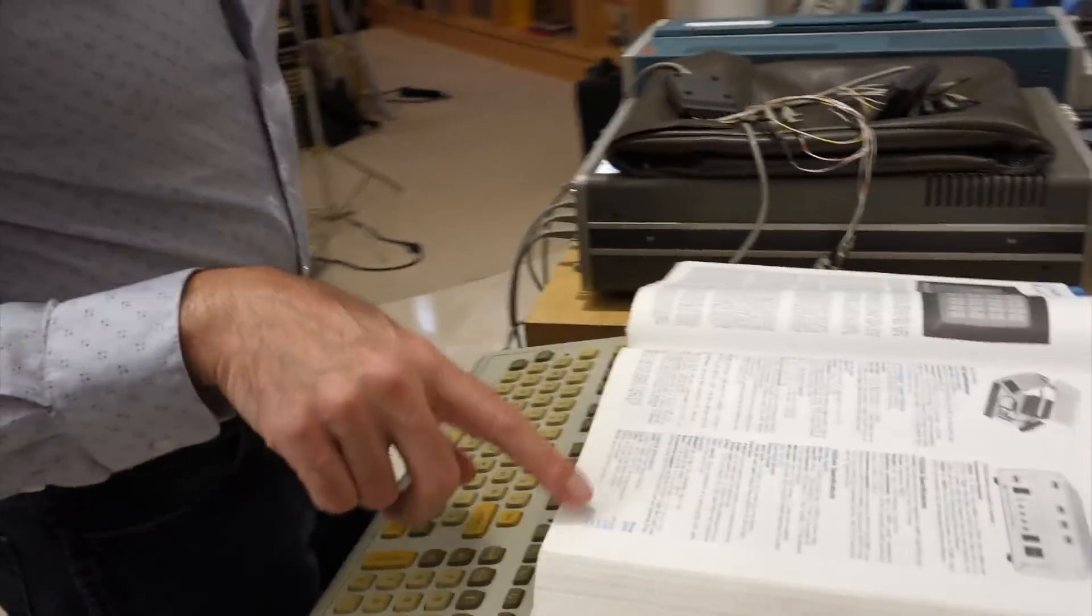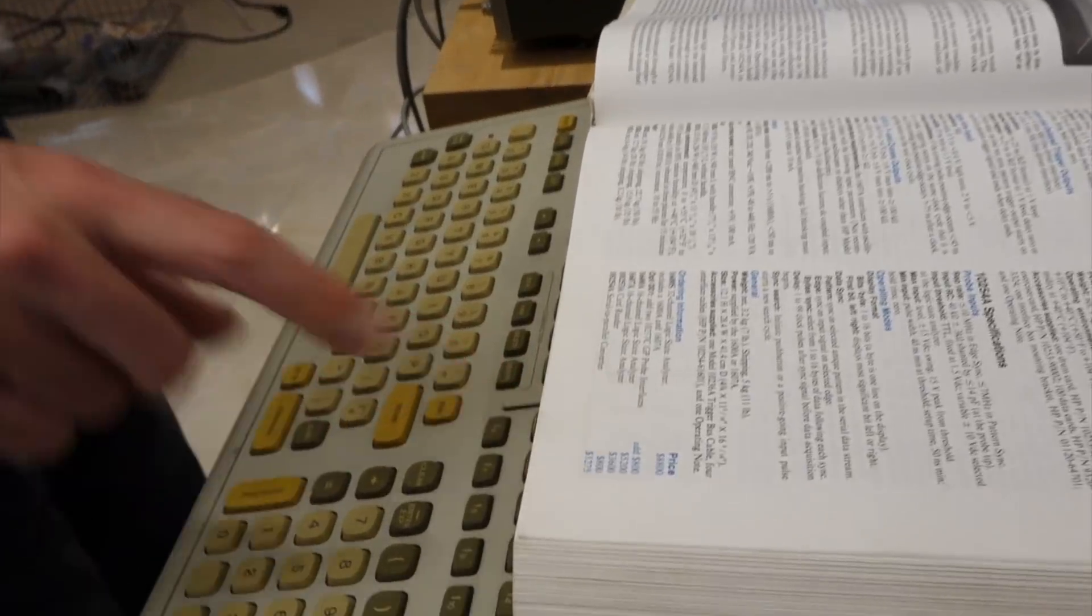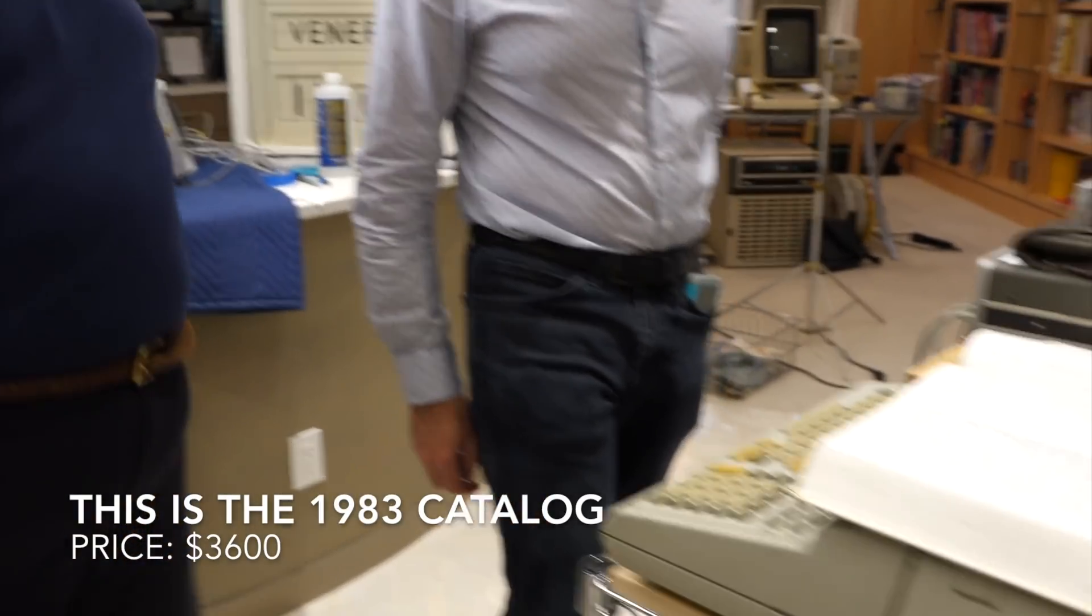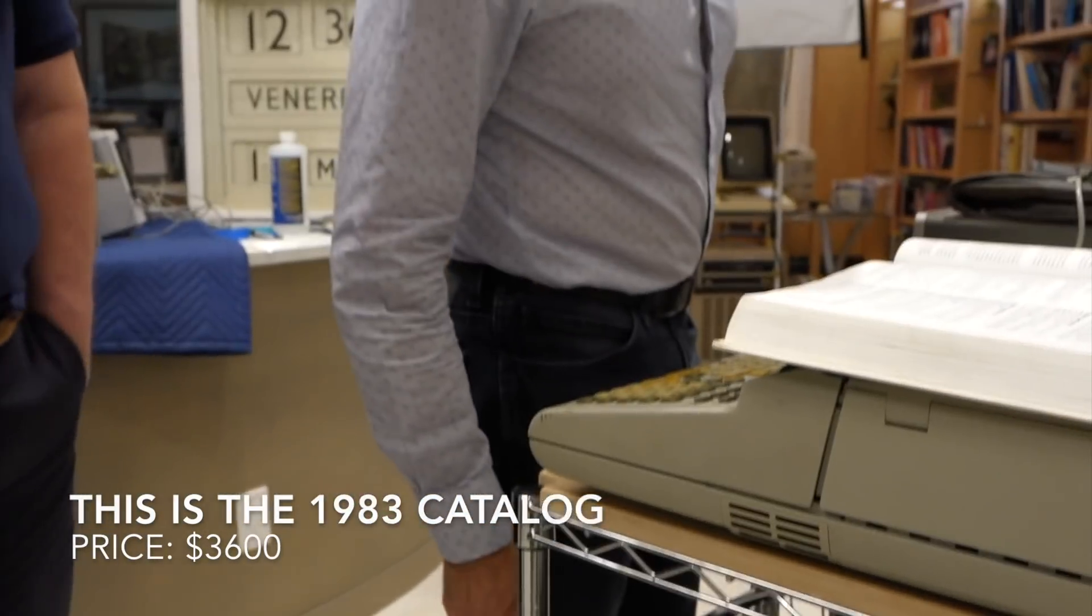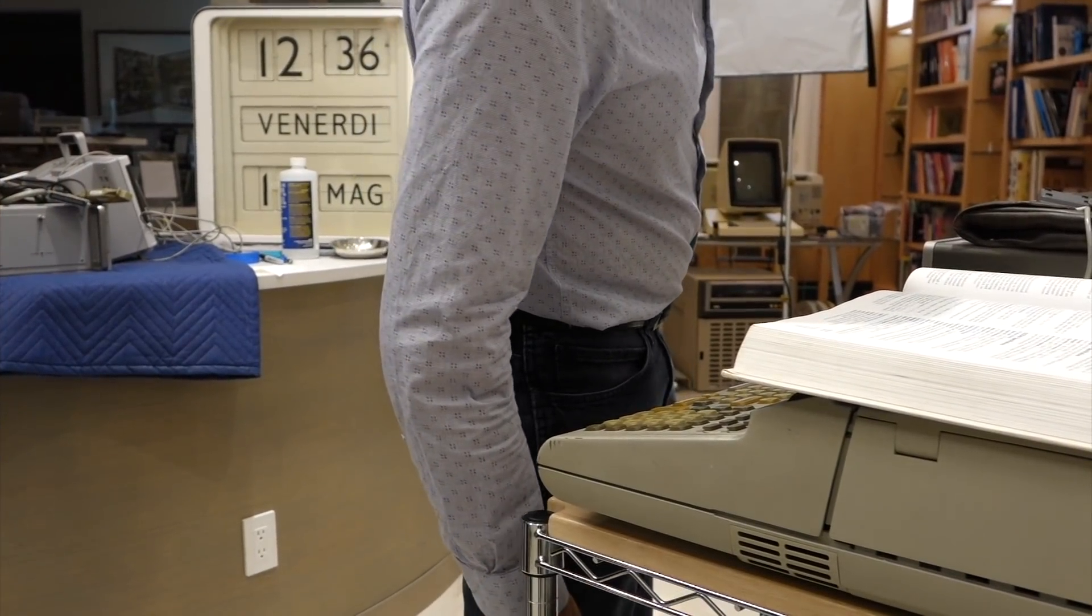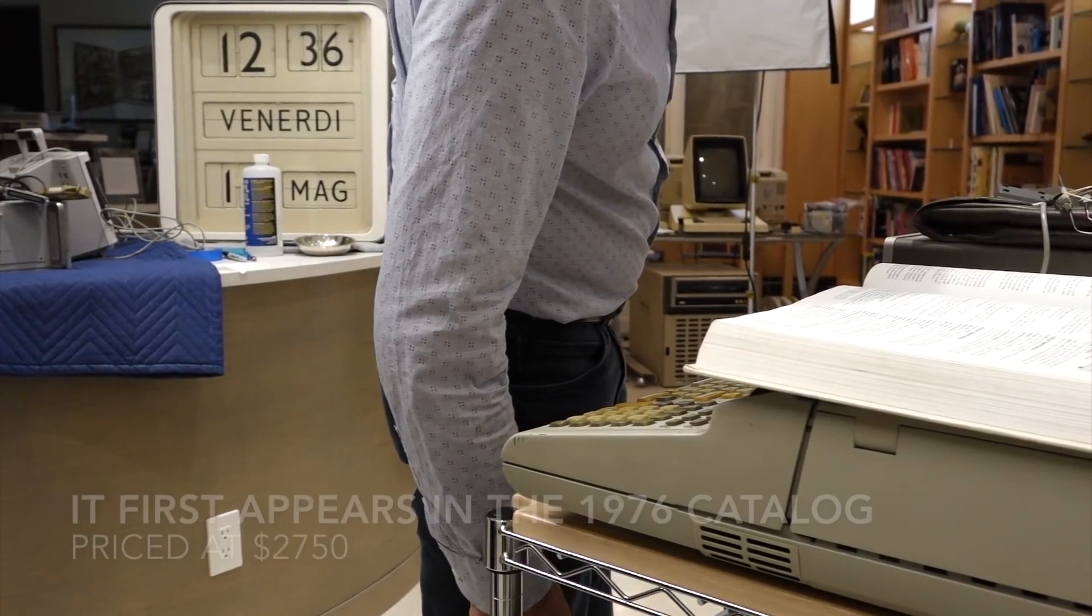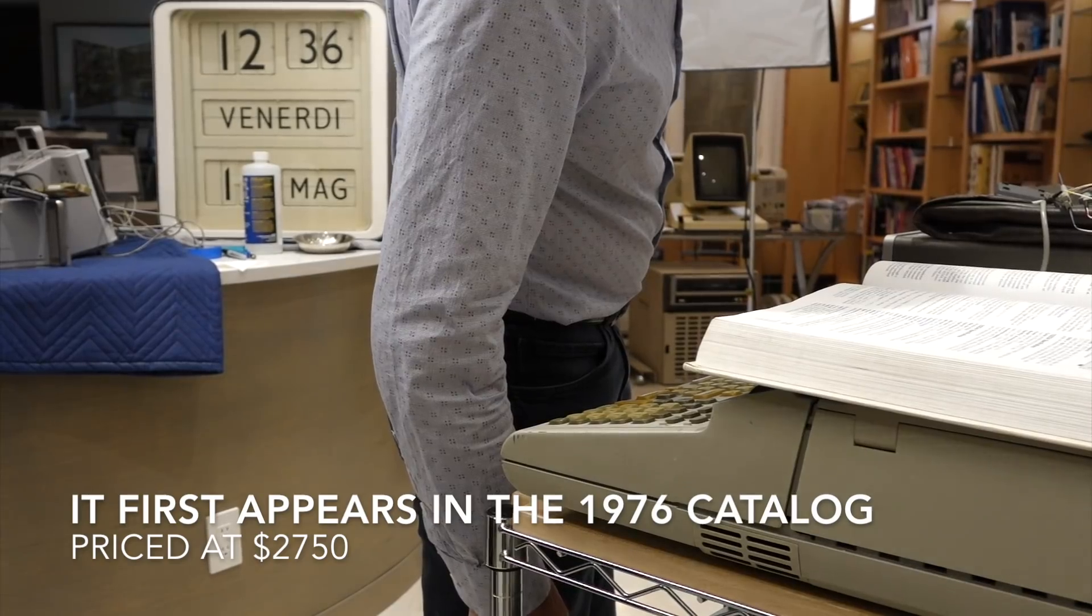So what was the price on that thing? $3,600 for the 16-channel in 1983. An expensive car. Well, this is 1983, I think it's obsolete by the time it's on that catalog. We should have gotten the 1975 catalog, and it's probably way more expensive.